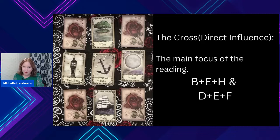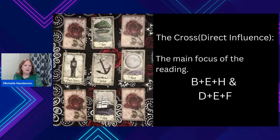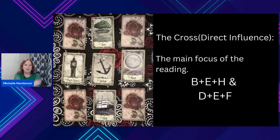We're going to get even more information doing the cross, which represents direct influence — the main focus of the reading. We're going to take B, E, H and D, E, F and see what this information has. A lot of this we already have information from previously, but it always gives you a different way to look at the information. When we look at the direct influence, the main focus is the tree, the anchor, and the ship.